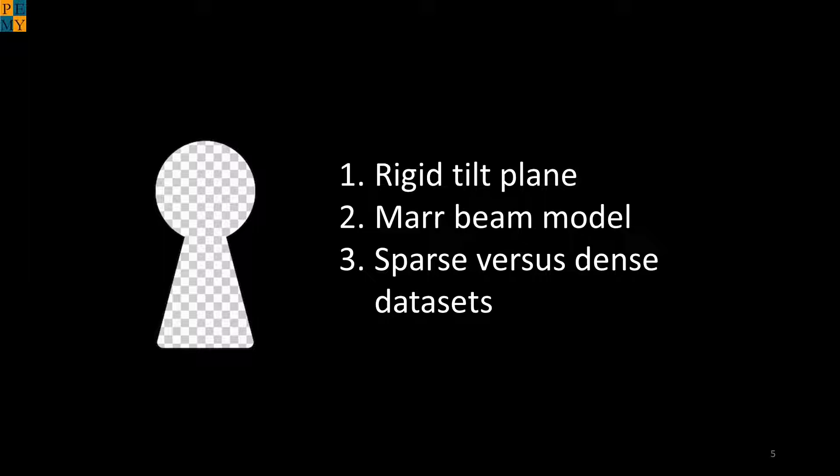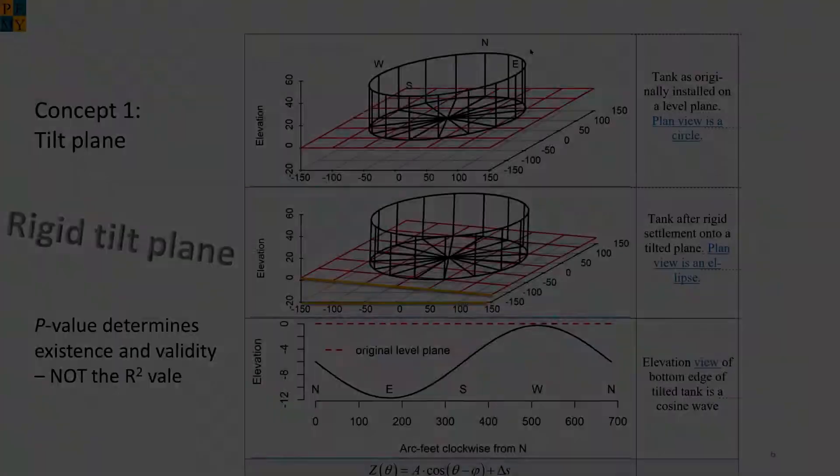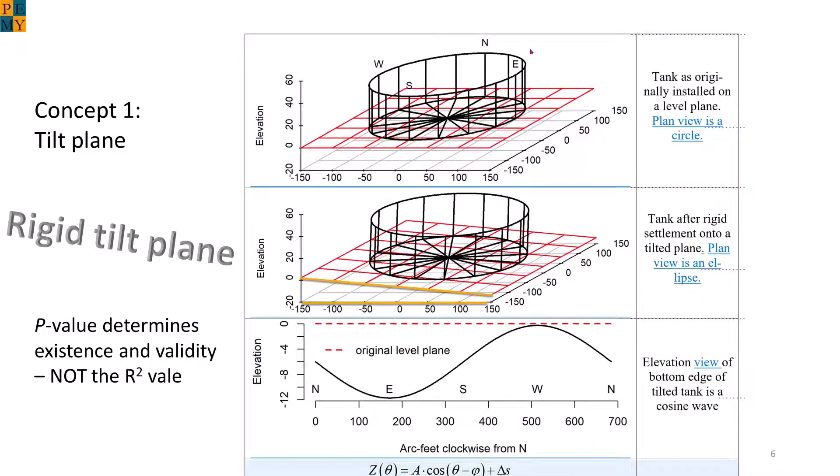Finally, the third concept is what we already talked about. Today, laser scan data is being used more frequently for settlement analysis. Therefore, API 653 needs updating to account for these new dense data sets. Let's jump back to concept 1, which is the tilt plane. It either exists or is so small that it can be neglected. When there is a tilt plane, a cosine curve is formed as shown at the bottom.